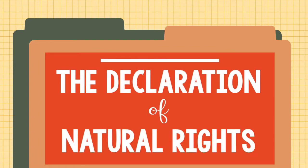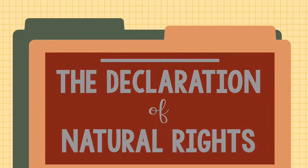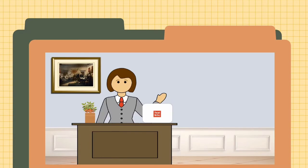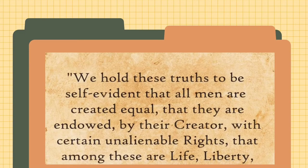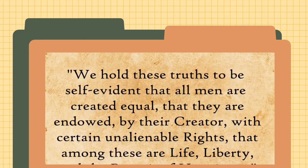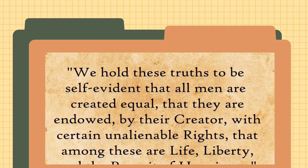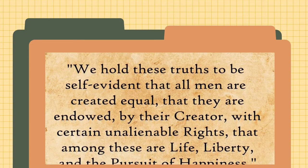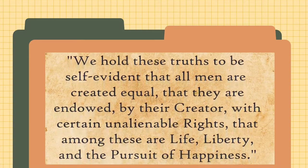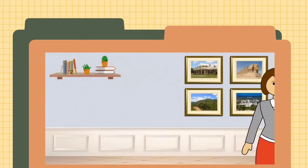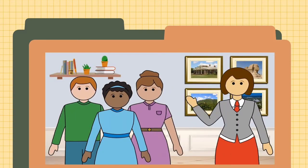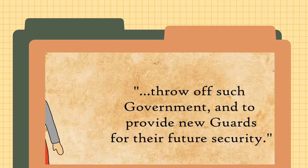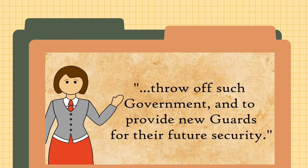The next section is referred to as the Declaration of Natural Rights. In words that have been immortalized in the minds of generations of people, this section explains that every citizen is born with certain rights that should never be taken away. 'We hold these truths to be self-evident, that all men are created equal, that they are endowed by their creator with certain unalienable rights, that among these are life, liberty, and the pursuit of happiness.' It goes on to state that the power of government comes from the people, and if the government abuses the rights of the people, they have a right to throw off such government and provide new guards for their future security.